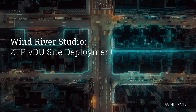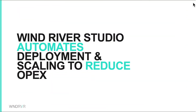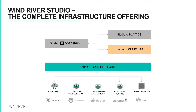We are going to discuss a ZTP VDU Site Deployment. Wind River Studio automates deployment and scaling to reduce operational expense. There are four components to Wind River Studio Operator. Our focus here is on Wind River Studio Cloud Platform, which provides a pre-verified, pre-integrated, and ready-to-deploy cloud-native platform based on Kubernetes for running containerized workloads.